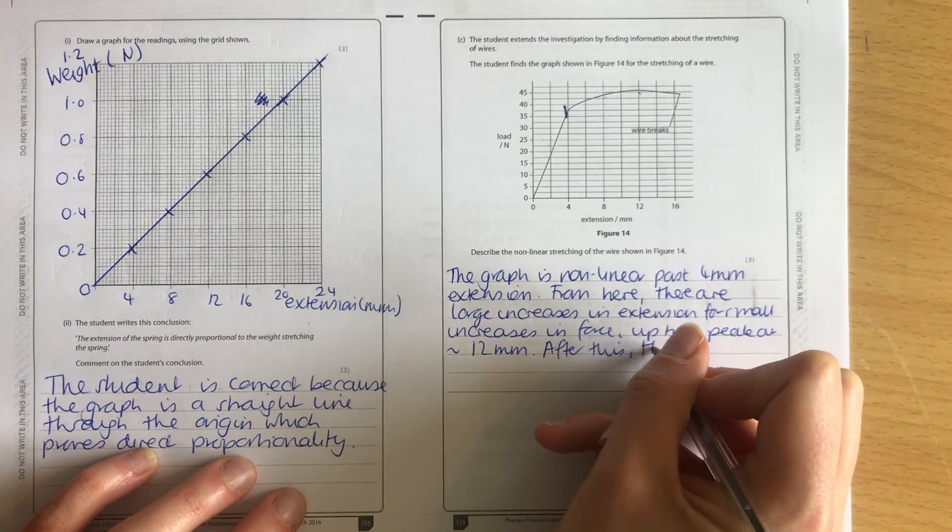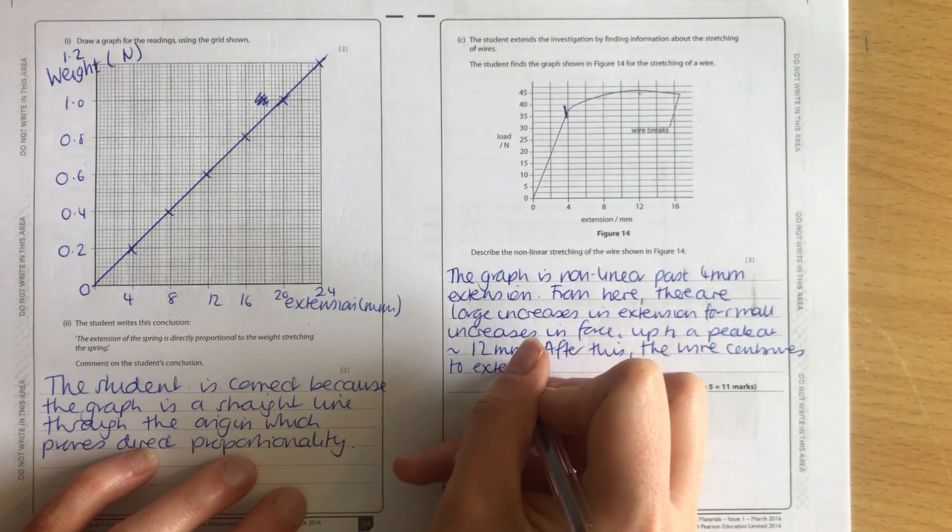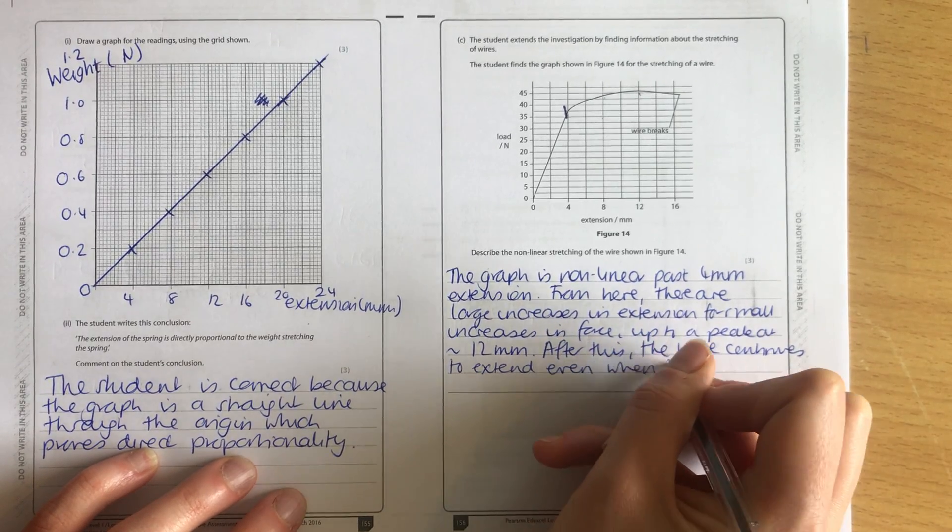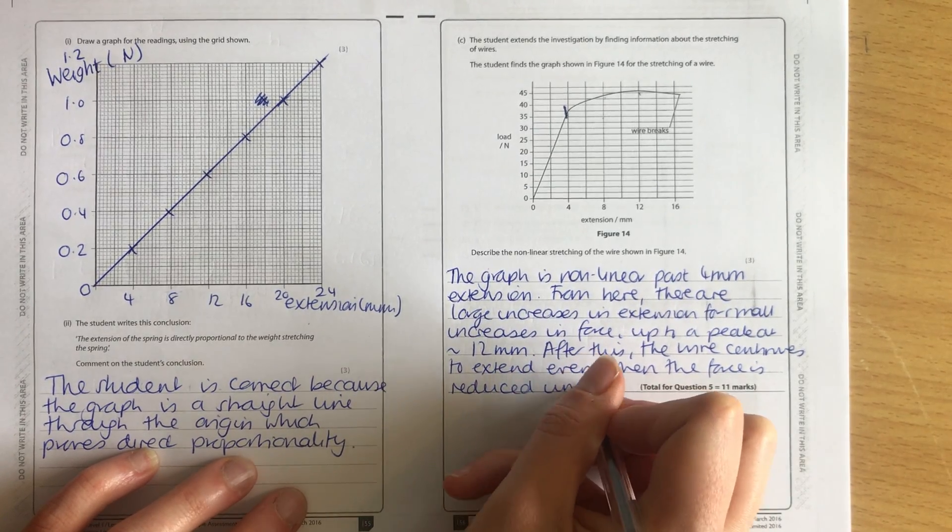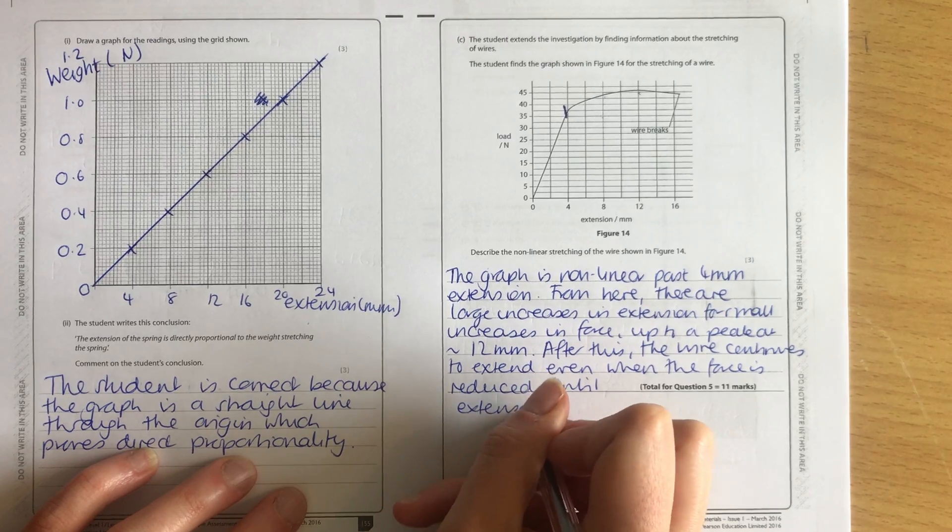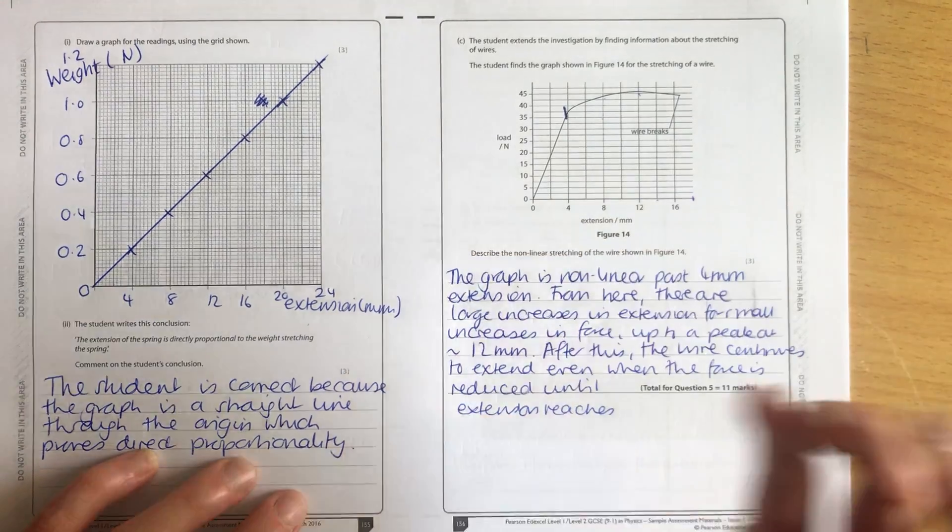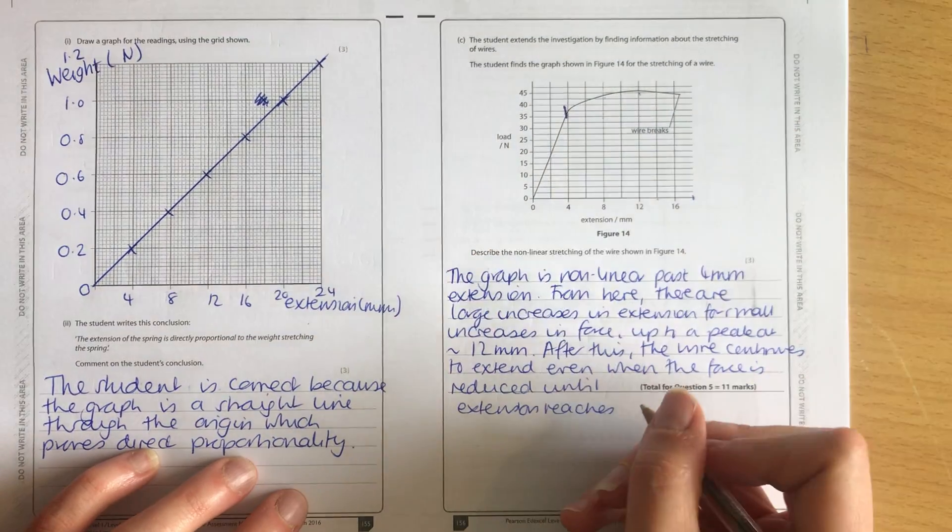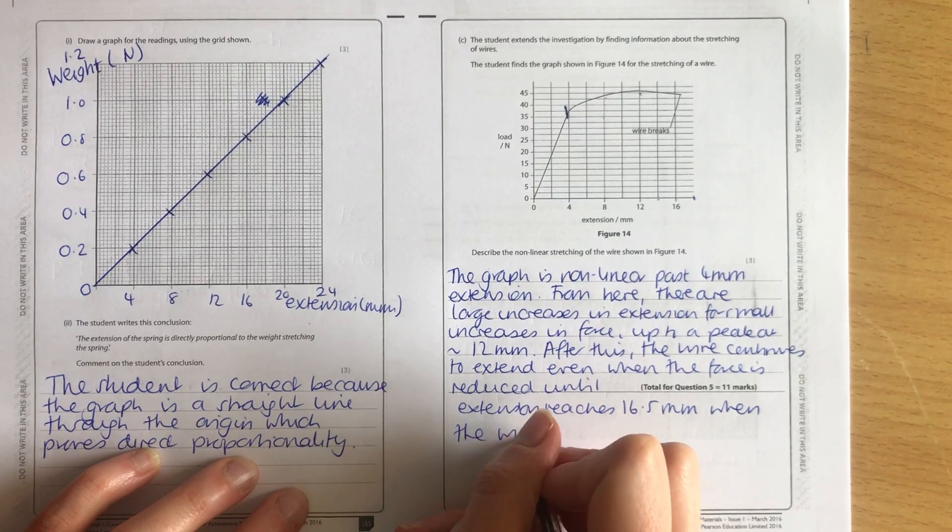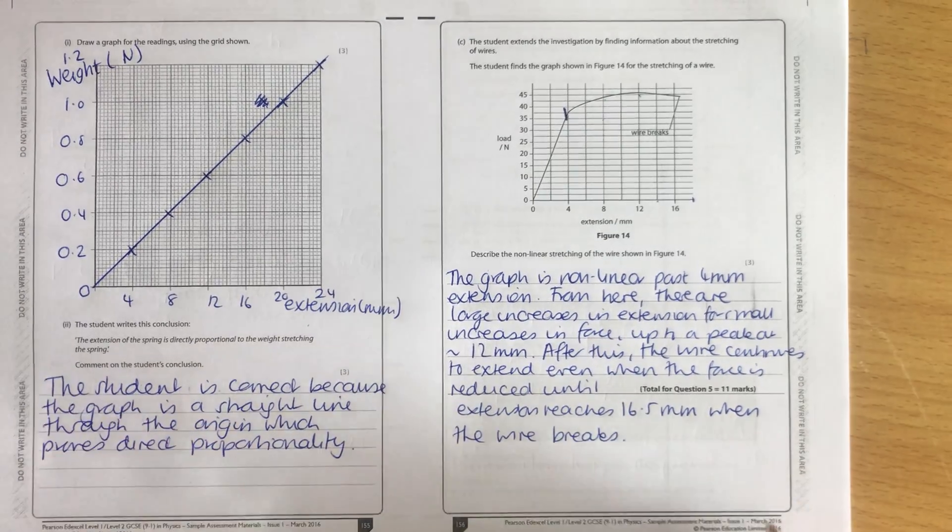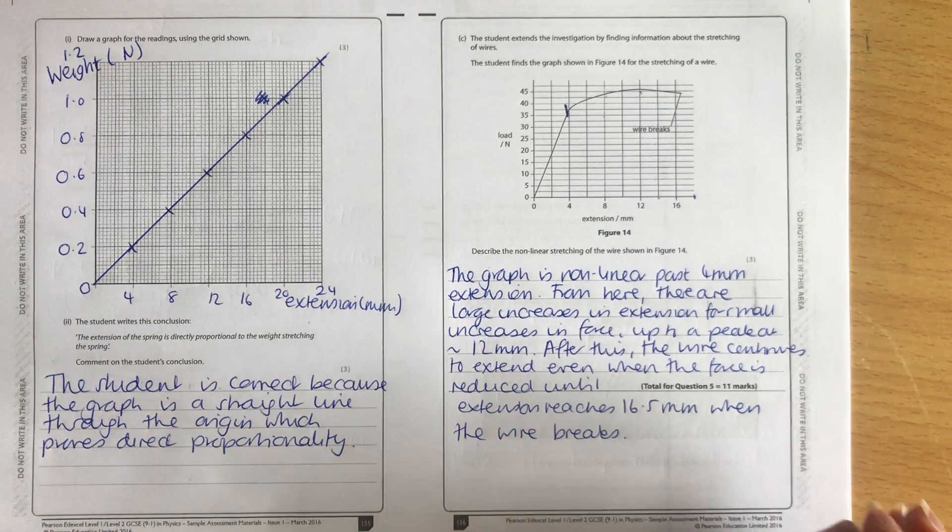The wire continues to extend until extension reaches, we can work this out, so 12, 14, so here would be 16, 18, so that's about 16.5. So it's 16.5 mm when the wire breaks. Now you don't need to have all of this in the answer to get the full marks. You need about two thirds of it. There are three possible points to make and you can get three marks for two of them.